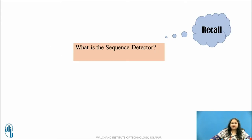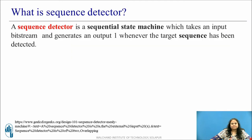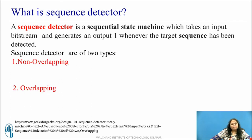Before moving ahead, pause this video and try to tell what is a sequence detector. A sequence detector is a sequential state machine which takes an input bit stream and generates an output logic 1 whenever the target sequence has been detected. Depending upon the method used to detect the sequence, sequence detectors are of two types: non-overlapping and overlapping type.